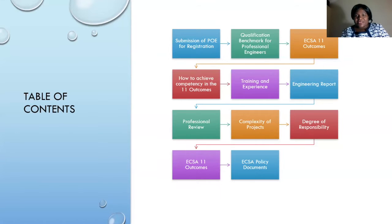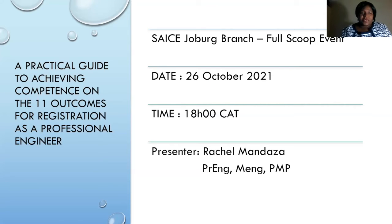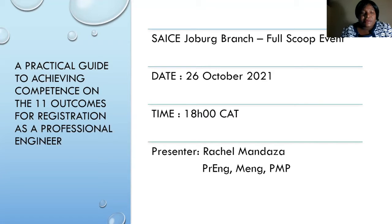You will learn one or two things from my presentation. It's just trying to give a guide on how you can achieve competence on the 11 outcomes for registration. I'll be focusing more on professional engineers. The process for registration for engineers has been standardized — it is now uniform across the board, across disciplines: electrical, civil, mechanical.